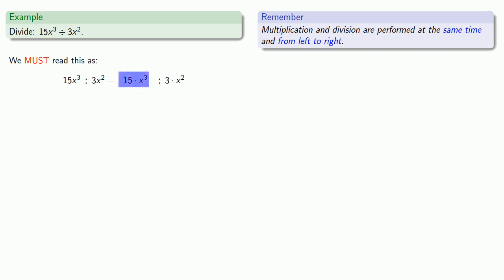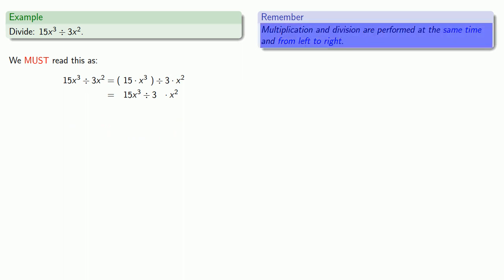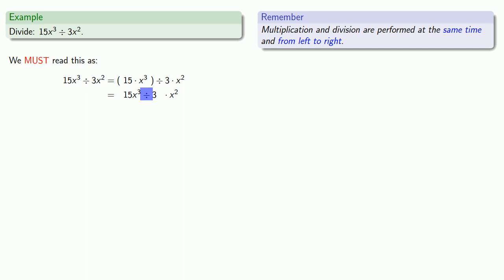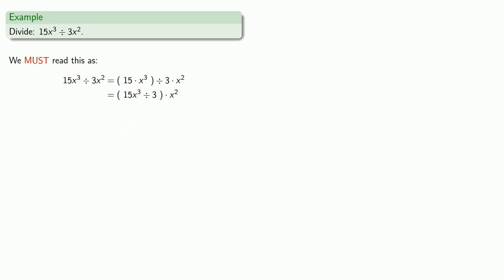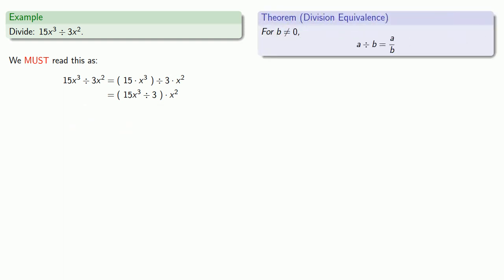So we have to perform the multiplication 15 times x to the third first — let's throw that inside a set of parentheses. Arithmetic is bookkeeping; algebra is generalized arithmetic, so everything else that we had before is still there. We still have divide by 3 times x squared. Multiplication and division are performed at the same time from left to right, so we encounter this divide by 3 and have to take care of 15x cubed divided by 3 first — we'll throw it inside a set of parentheses. So 15x to the third divided by 3 — a quotient can be rewritten as a fraction, so that becomes 15x cubed over 3.